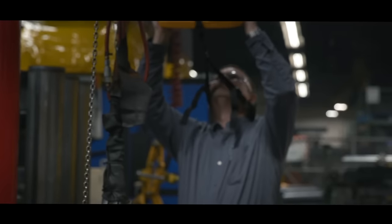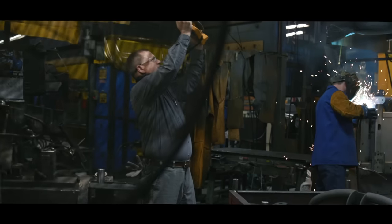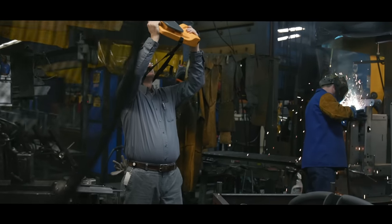The Fluke II900 Sonic Industrial Imager works in noisy places, without having to shut down the line.